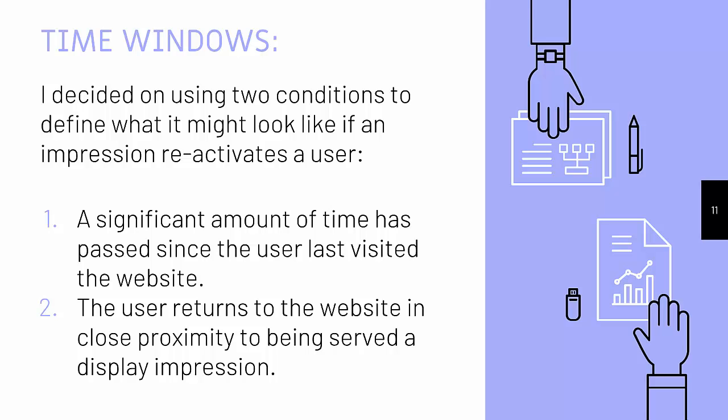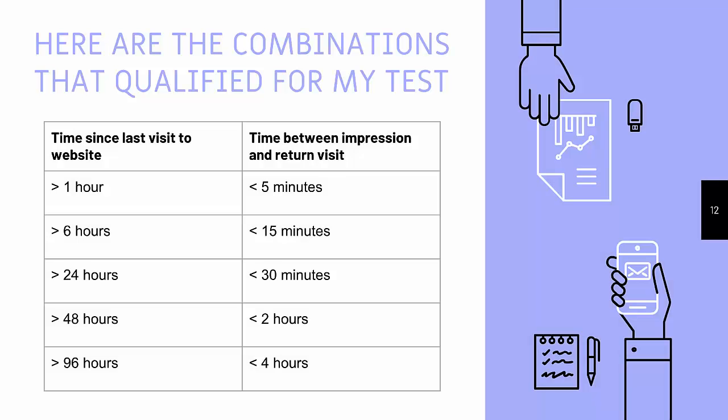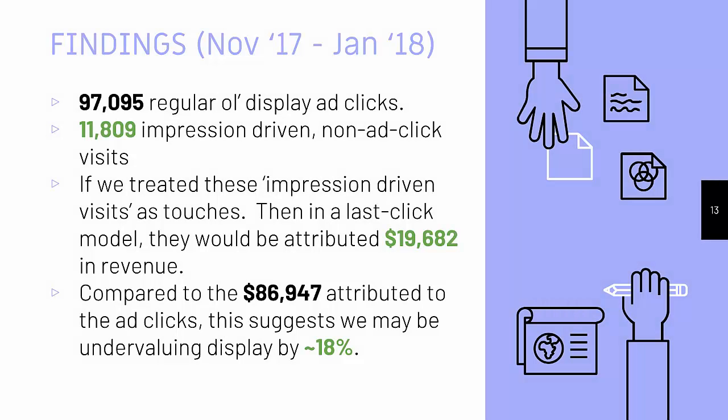Specifically for view-throughs, they came back through another channel, not by clicking on the ad itself. I set up multiple windows to try and capture this, and I think this is pretty generous to what your definition of view-through might be. An example is like you've been away for more than an hour and then you come back within five minutes of seeing an impression. Or on the other side, you've been away for four days and you come back within four hours of seeing an impression. Even using this generous definition, we found over these three months there were about 97,000 regular old ad clicks, and to that there were about 12,000 of these non-click, impression-driven visits. Even if I treat those as touches in a last-click model, that would account for about $19,000 in revenue — compared to what was already given to ad clicks, that's an extra 18% in revenue. So maybe that's how much we're missing with this whole view-through activity.